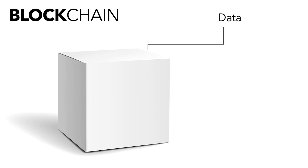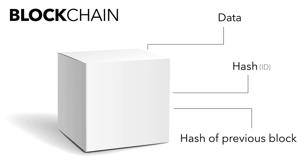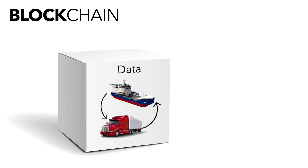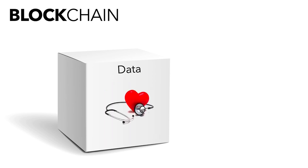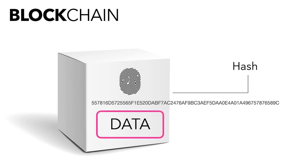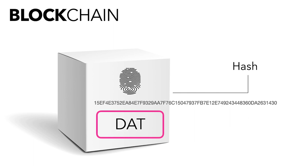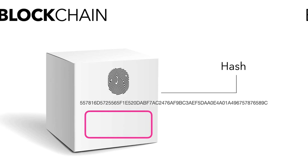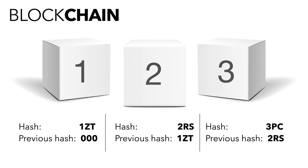Each block stores three key pieces of information: data, the block hash, and the hash of the previous block. The data stored on the block can be financial, supply chain, property transactions, medical records, or any other information we need to store and track. The block hash is a cryptographic value of numbers and letters that identifies a block — it's unique, like a fingerprint. If the data changes inside the block, this will cause the hash to change. Hashes are useful to detect changes in blocks; if the hash changes, it's no longer the same block.